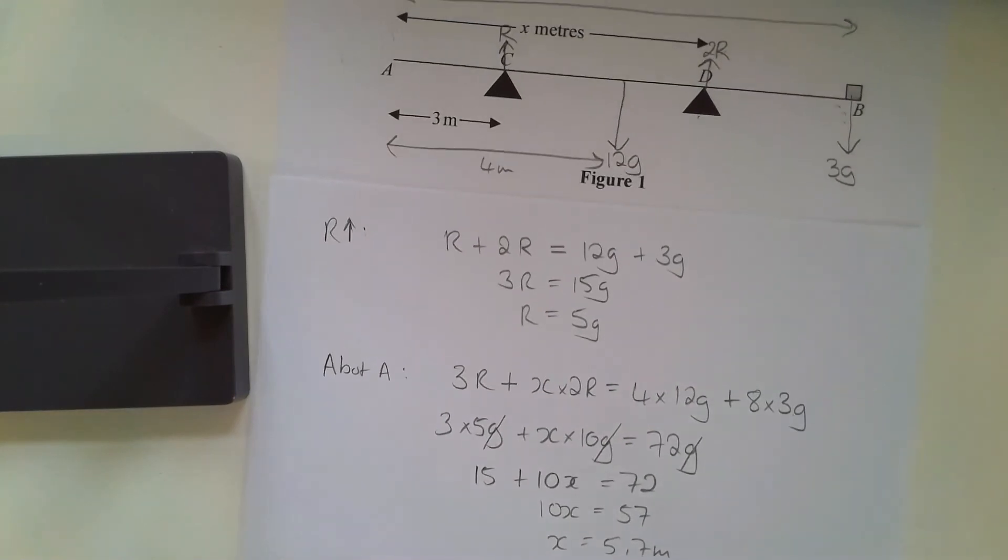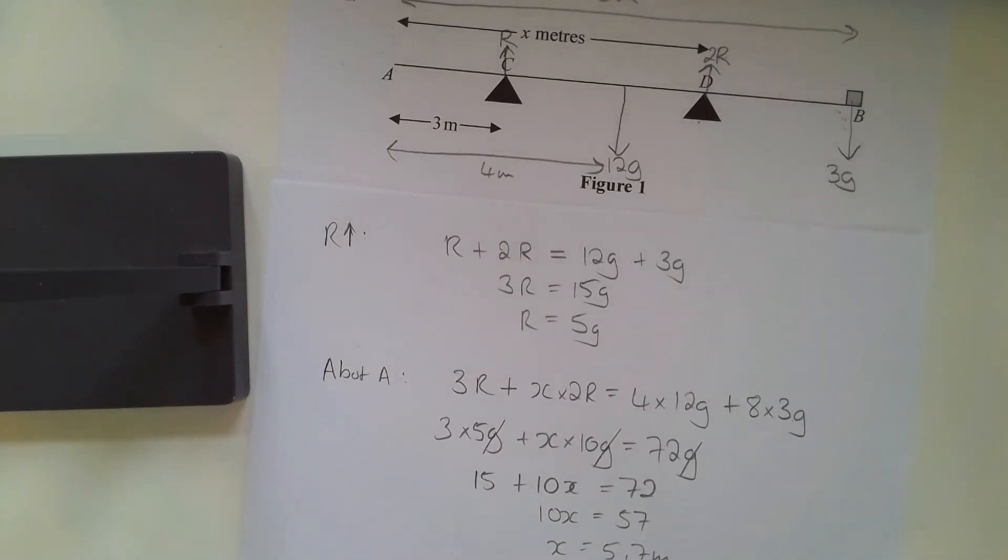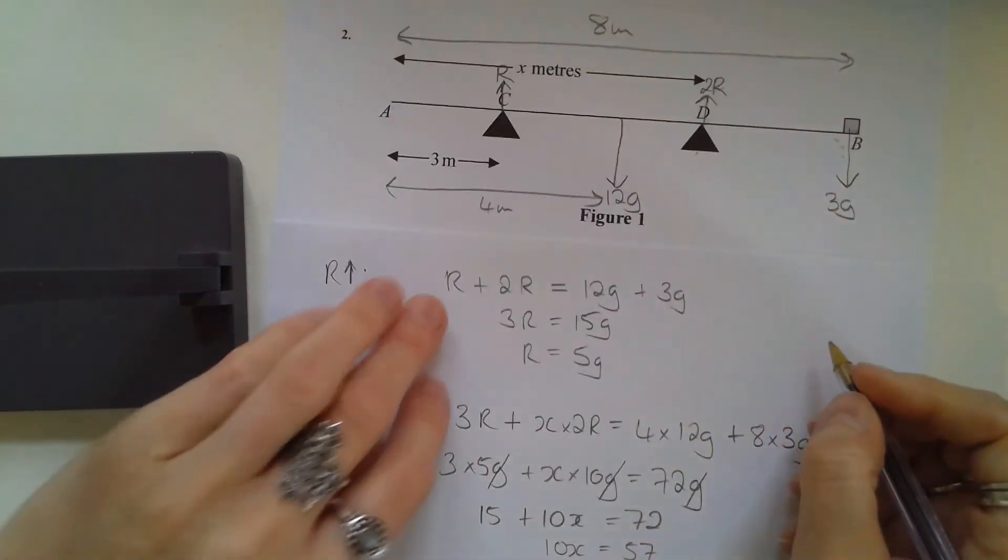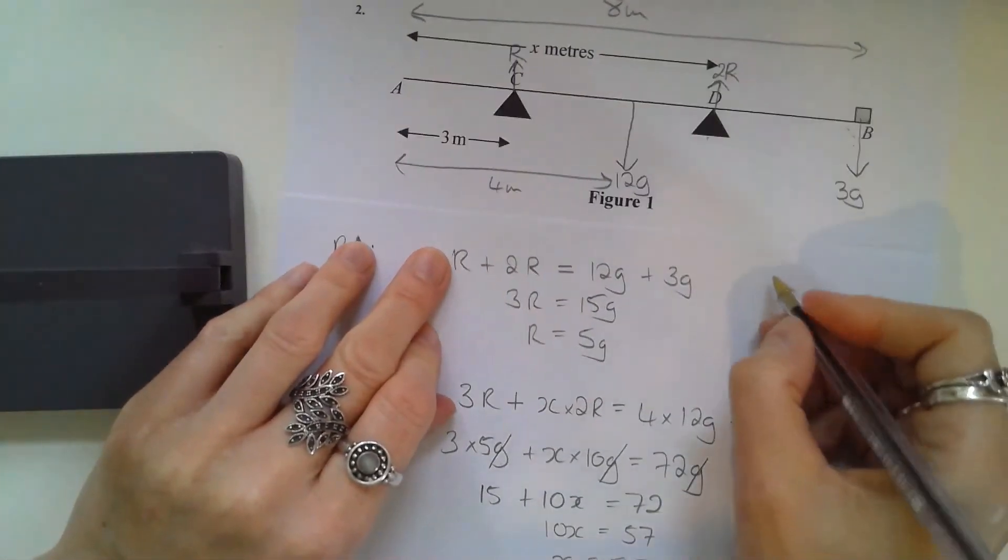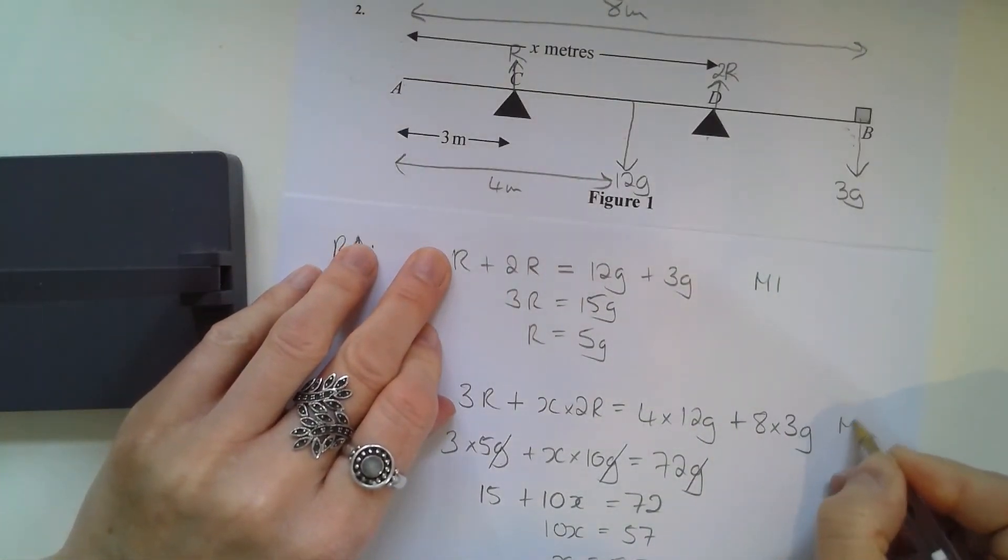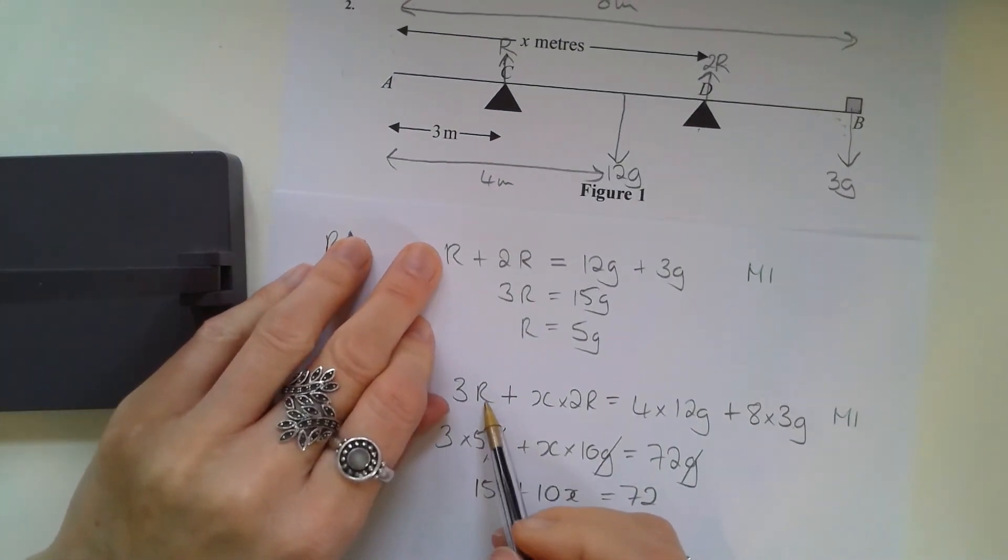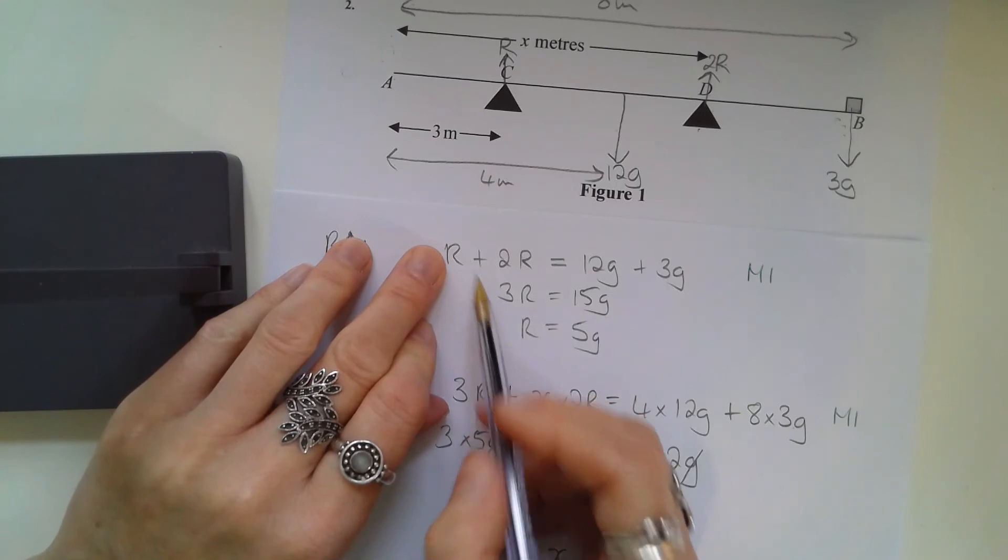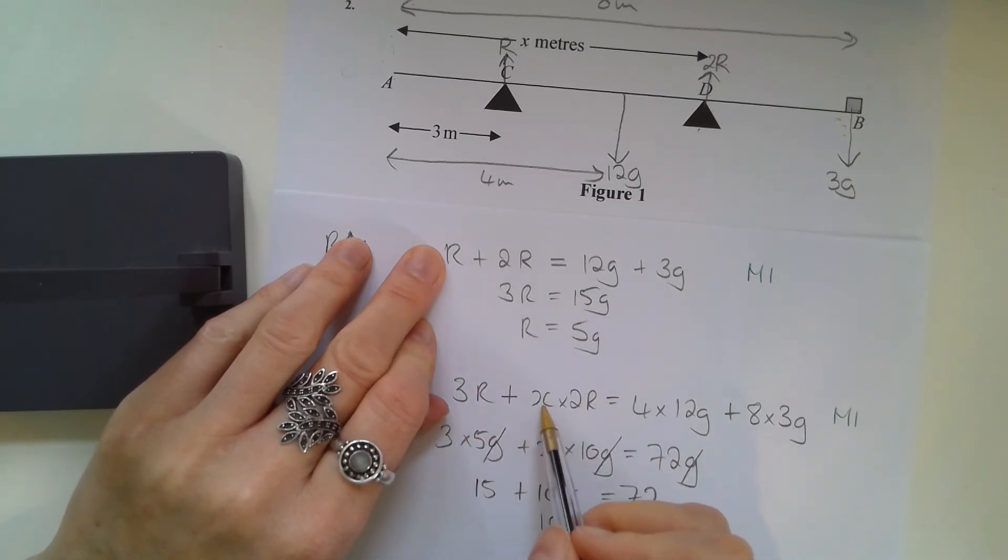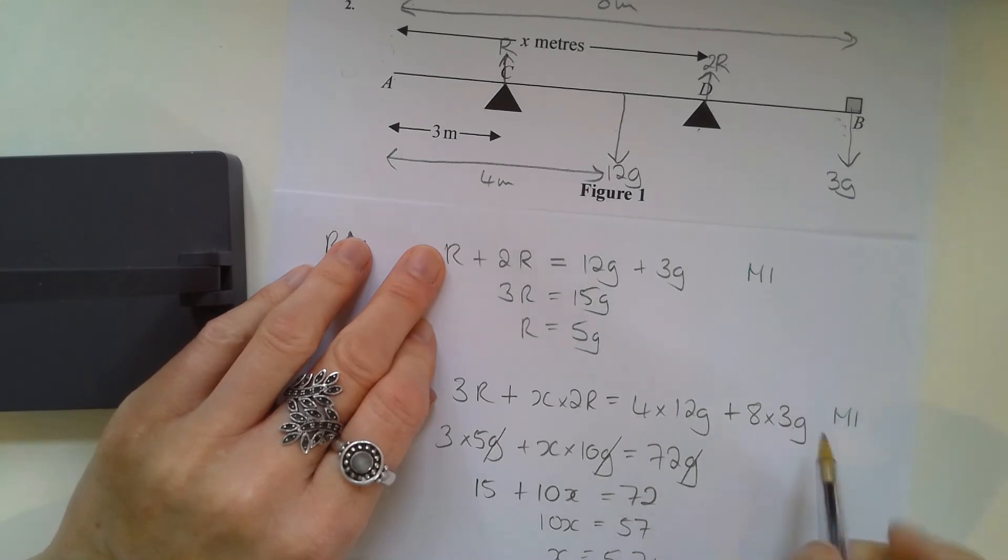Marks-wise for the equations that you're making, there's a method mark for each one on the basis that you've included all terms and that when you're especially when you're taking moments, that you have a force multiplied by a distance in each case. So if you miss out the force or miss out the distance, then you're not going to get that method mark.